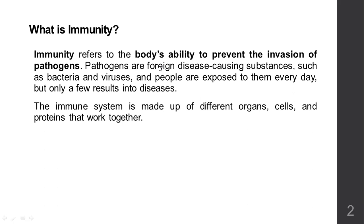The immune system is made up of different organs, cells, and proteins that work together. The organs are mainly your lymphatic system. The cells are WBCs and lymphocytes. The proteins are immunoglobulins. They all work together and form the immune system in your body.